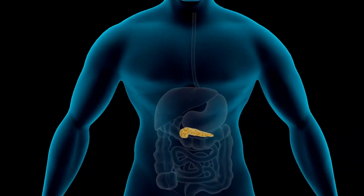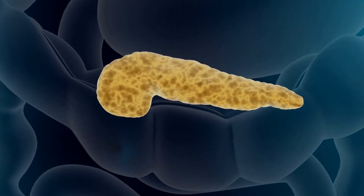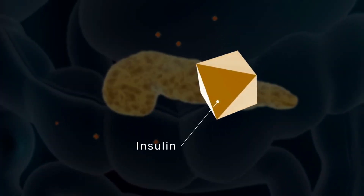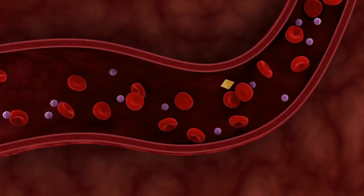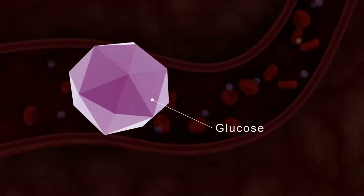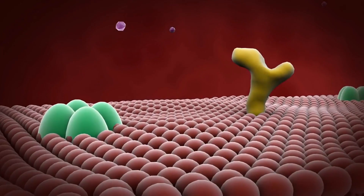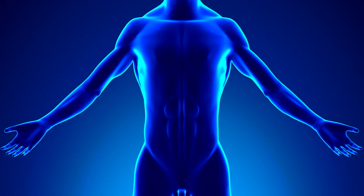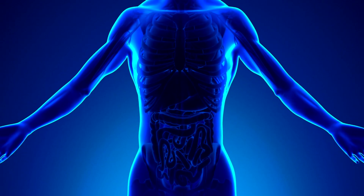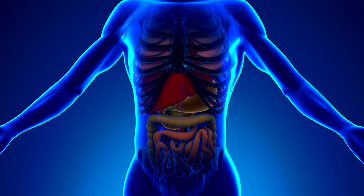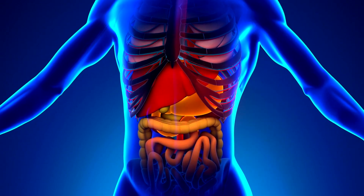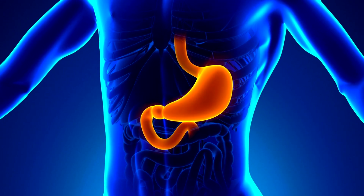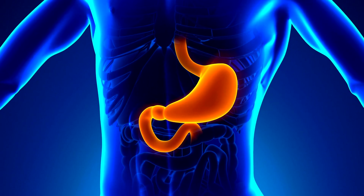Insulin resistance, a defining feature of type 2 diabetes, largely causes an imbalance of lipids in the blood called dyslipidemia. The body makes extra insulin to compensate for cells that develop resistance to its effects. Elevated insulin levels cause increased blood levels of LDL cholesterol and triglycerides, as well as lower levels of HDL cholesterol, and also encourage the liver's production of these substances.